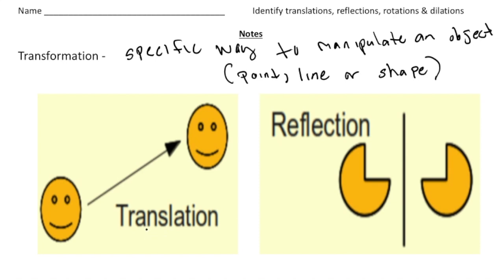For a translation, write down the keyword: slide. If you look at this image, we have a happy face and basically this happy face is just being slid this way. That's an example of a translation, where you take an object and just move it a certain direction.